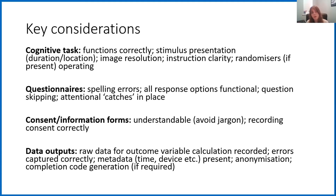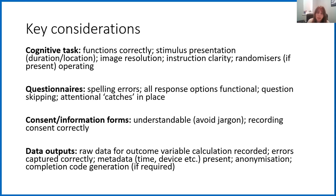Finally, a thing to make sure to pilot as well is your data outputs. This is making sure that the spreadsheets that Gorilla has produced actually give you the information that you need to calculate your outcome variables. For example, if you're doing a reaction time task and you want to make sure you catch any errors — such as pressing during the fixation point, which might suggest that responding inhibition is failing — also making sure that it connects any metadata you need, such as time and device, that your anonymisation is working the way you intend, and if you're using Prolific, making sure that it is generating a completion code and feeding participants back to the correct site.